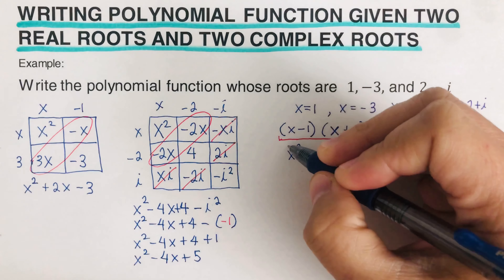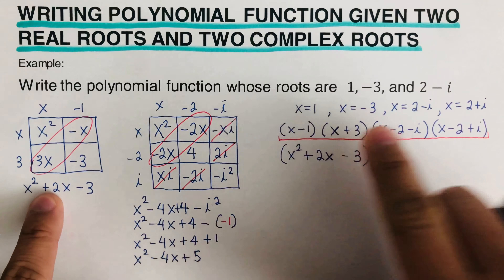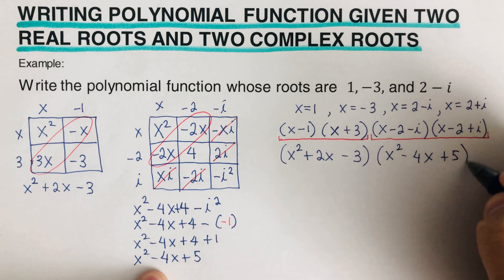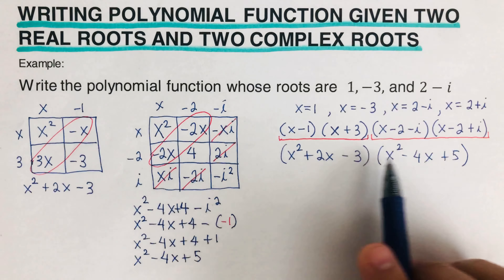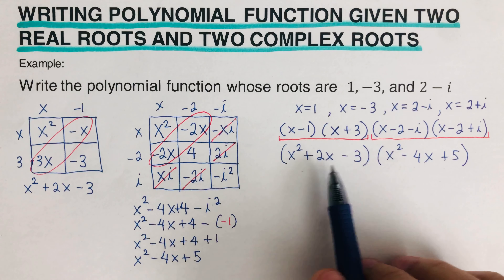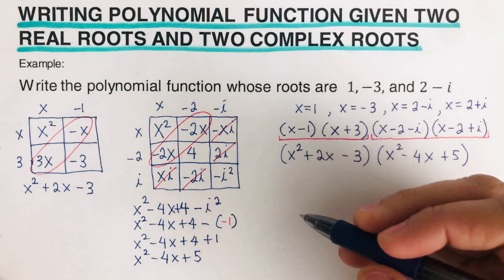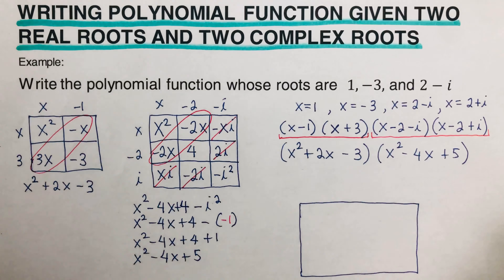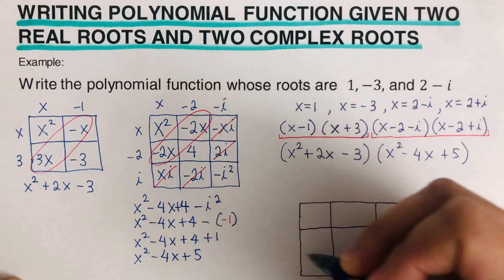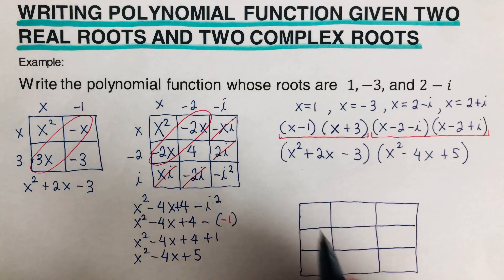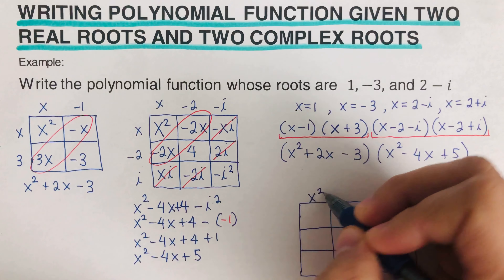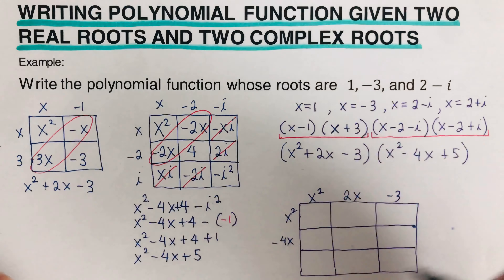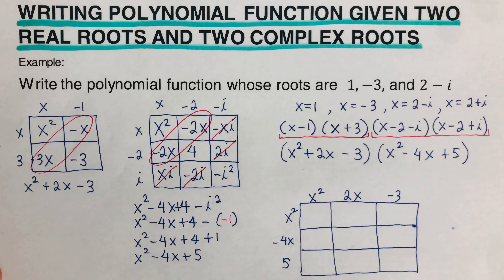So the product of the first two real-root factors is x² + 2x - 3, and the product of the complex conjugate pair is x² - 4x + 5. Now we multiply these two quadratics together using a three-by-three box, writing x², 2x, -3 along one side and x², -4x, 5 along the other.